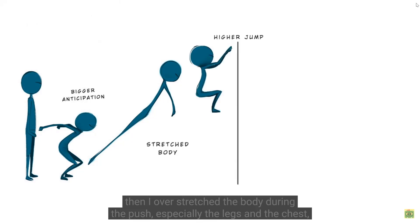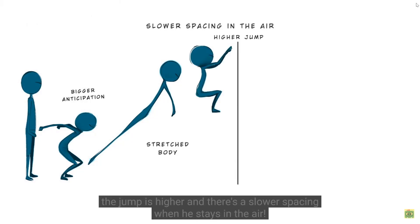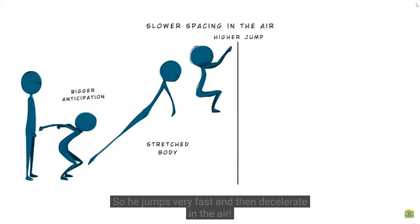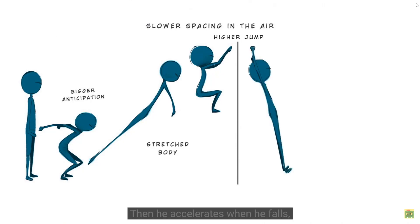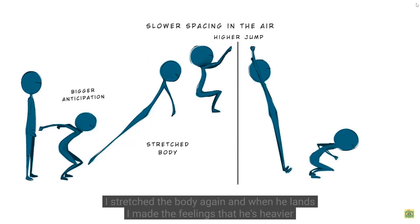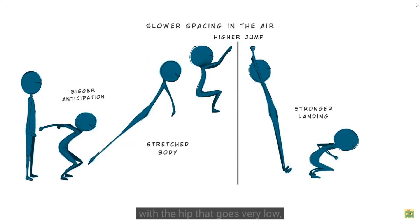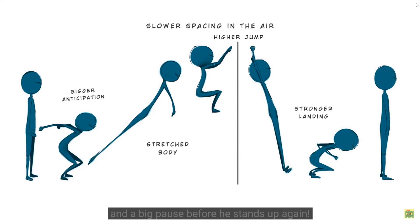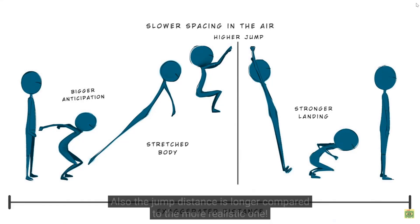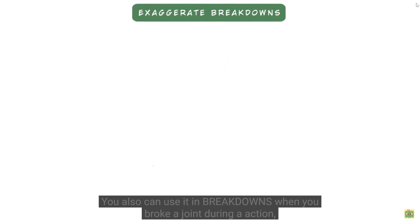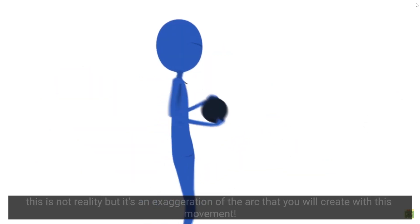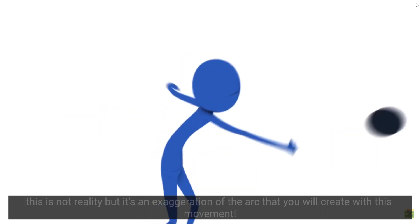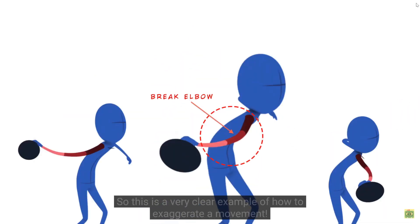The jump is higher and there's a slower spacing when it stays in the air, so it jumps very fast and then decelerates in the air. Then it accelerates when it falls — I stretch the body again, and when it lands, I create the feeling that it's heavier, with the hips going very low and a big pose before standing up again. The jump distance is also longer compared to the more realistic one. You can also use exaggeration in breakdowns, breaking a joint during an action — this is an exaggeration of the arc you create with that movement.